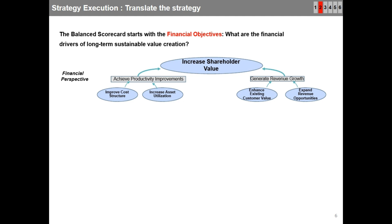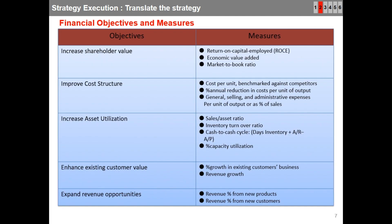We need to have measures for each strategic objective — this is the crux of the balanced scorecard framework. You can see all five strategic objectives and their measures. For example, for the strategic objective of increasing shareholder value, three measures are identified: return on capital employed, economic value added, and market-to-book ratio. Similarly, you can read the measures against all strategic objectives of the financial perspective.